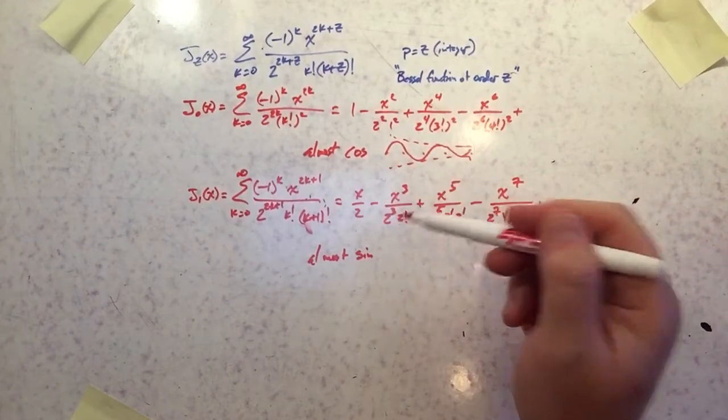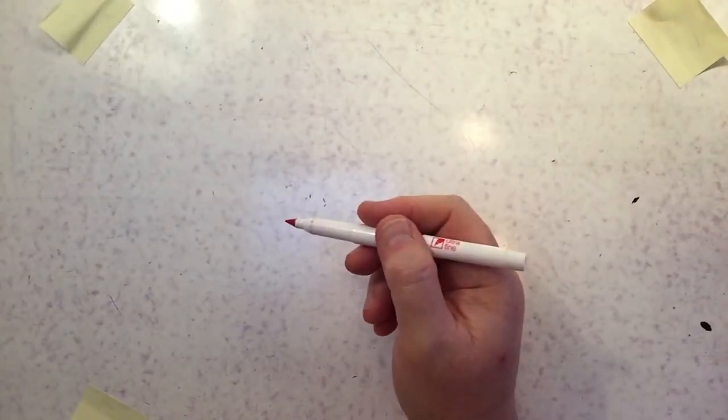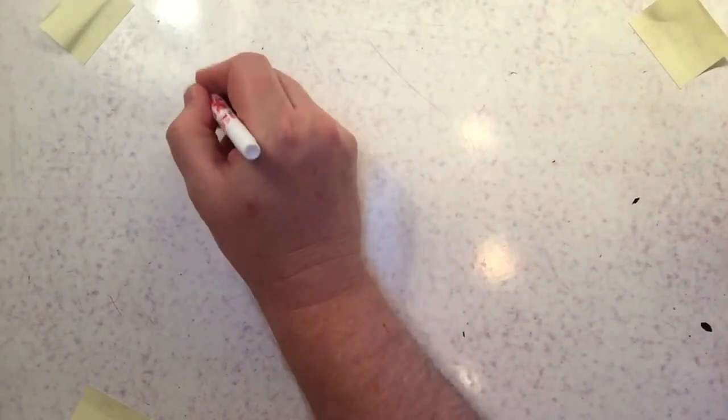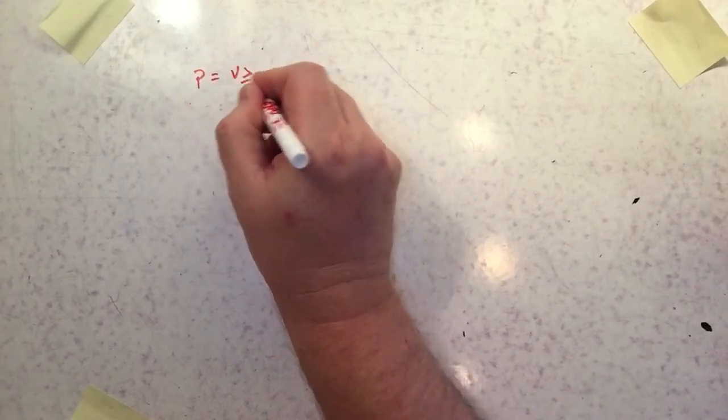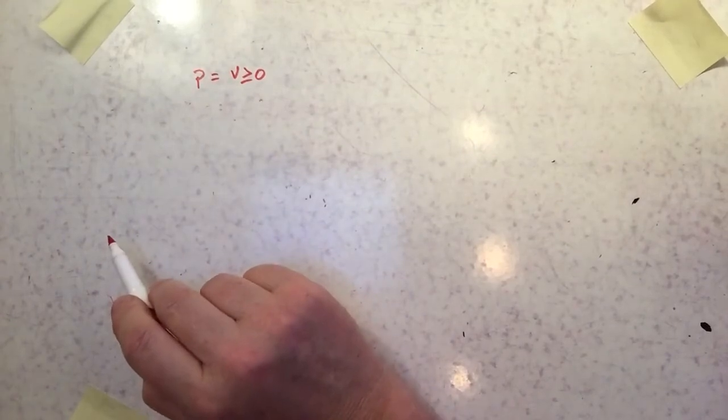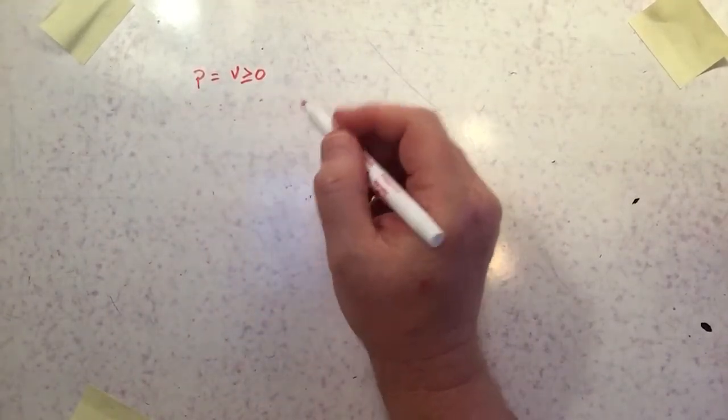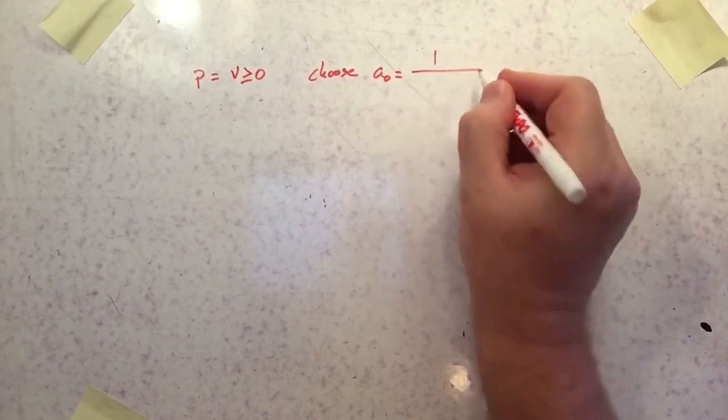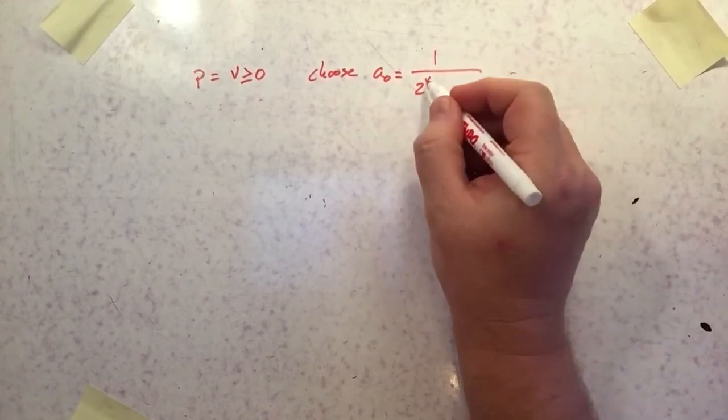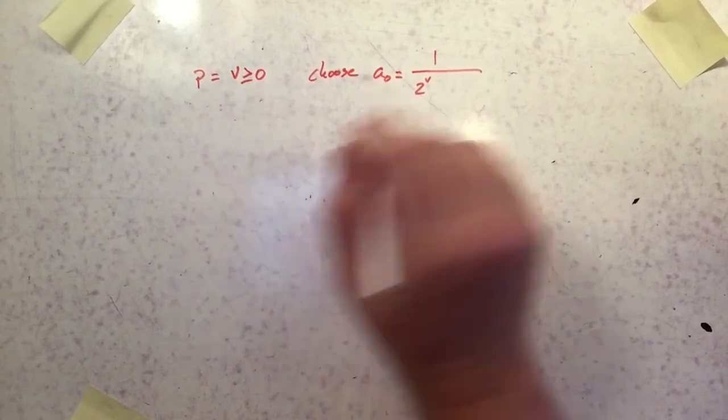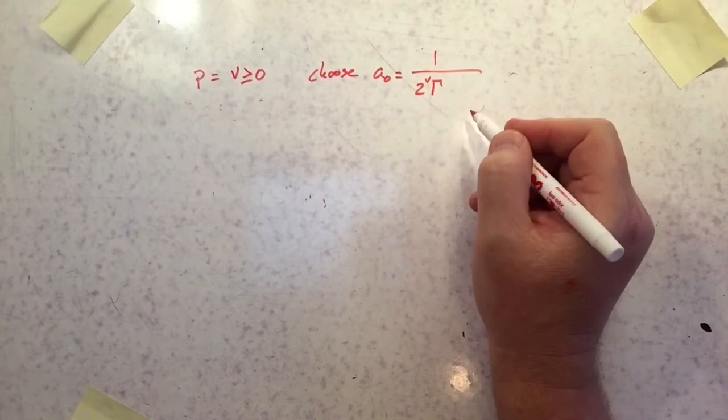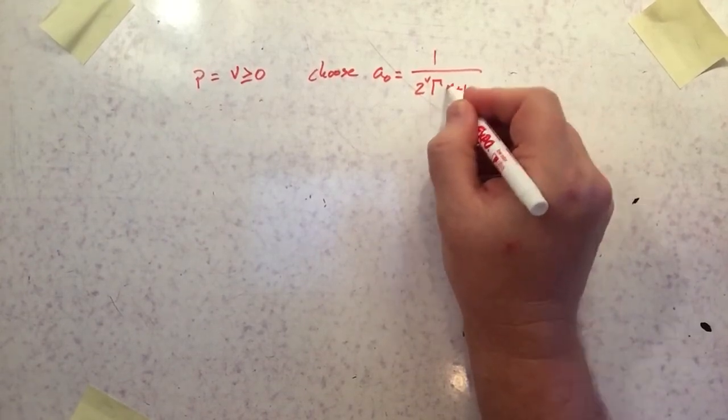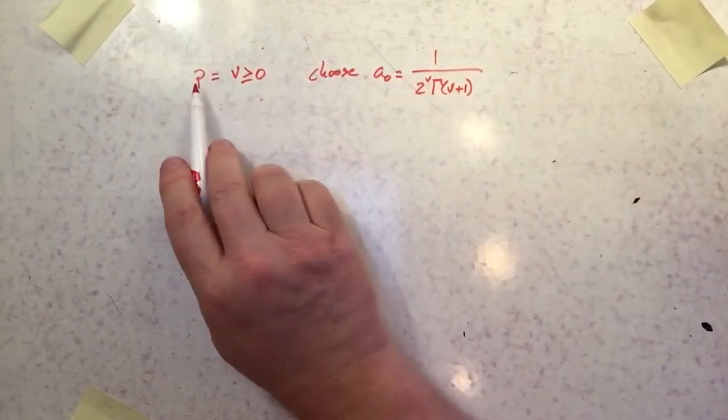The next thing I want to talk about is the next general solution and this is going to introduce that idea of the gamma function. A more general solution is when p is equal to any v greater than or equal to 0. It's no longer going to be limited to an integer. So when that's the case, we're going to choose a different a0. We're going to choose a0 to be equal to 1 over 2 to the v times gamma function of v plus 1.